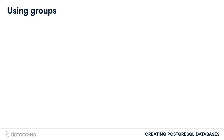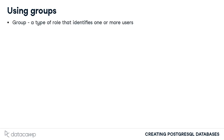It might become tedious to continuously grant the same set of privileges to a group of similar database users. While a user is a type of role in PostgreSQL that is typically associated to an individual, the group role provides a way for managing privileges for groups of individual users. This might prove useful when multiple users should be given the same privileges for access to database objects.